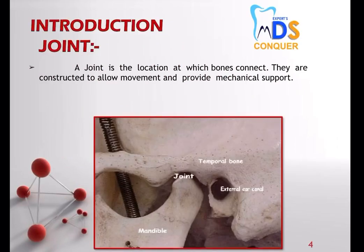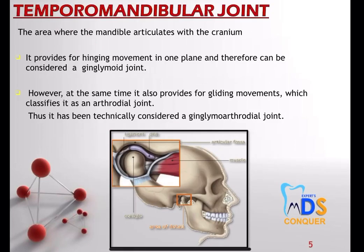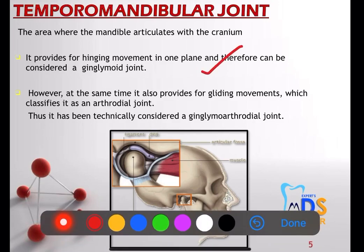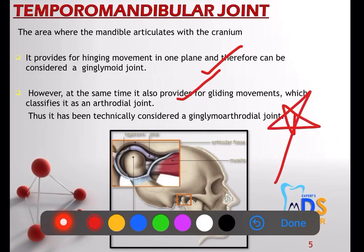For the introduction, you can write that it is a very important joint for the movement of the jaws — it is where bones get connected to each other and it is constructed to allow movement as well as to provide mechanical support. It is actually called a ginglymoarthroidal joint, because it provides a hinging movement in one plane — that is why it is called a ginglymoid joint — and at the same time it also provides a gliding movement, which classifies it as an arthroidal joint.